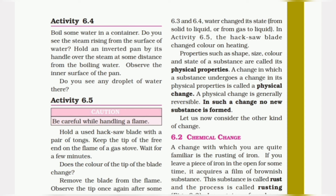We have to boil some water in a container, then observe the steam rising from the surface of the water. Hold an inverted pan by its handle over the steam at some distance and observe the inner surface. Yes, you can definitely see water droplets there. Perform the activity and find out the answer. That's it for this video — perform all these activities discussed, and we'll start the next activity in the next video.